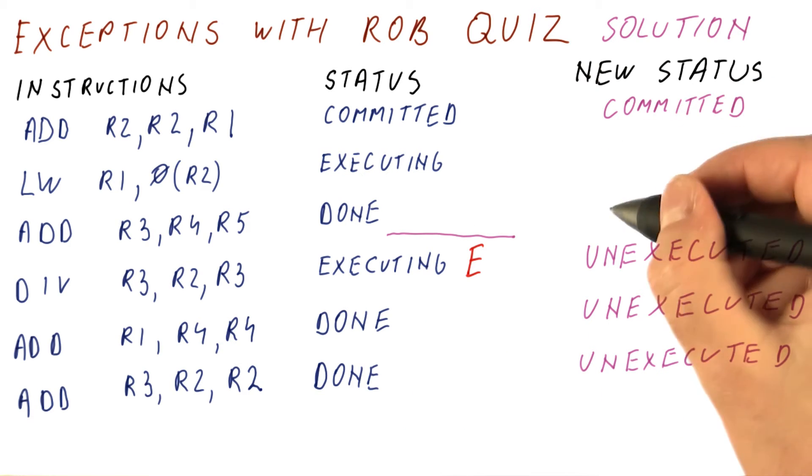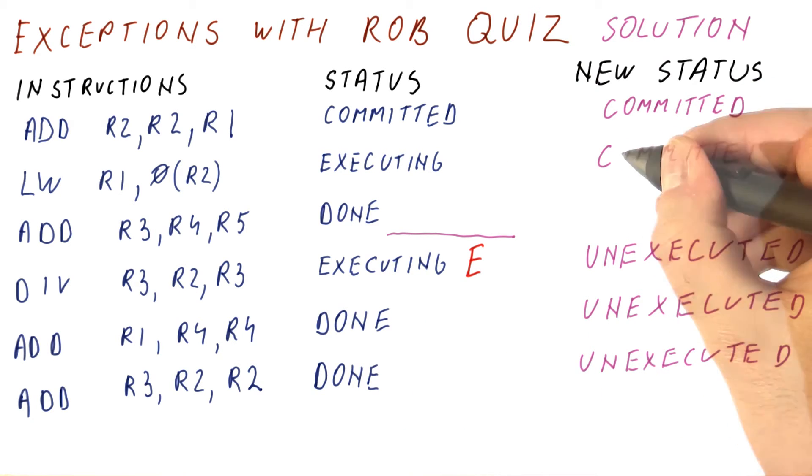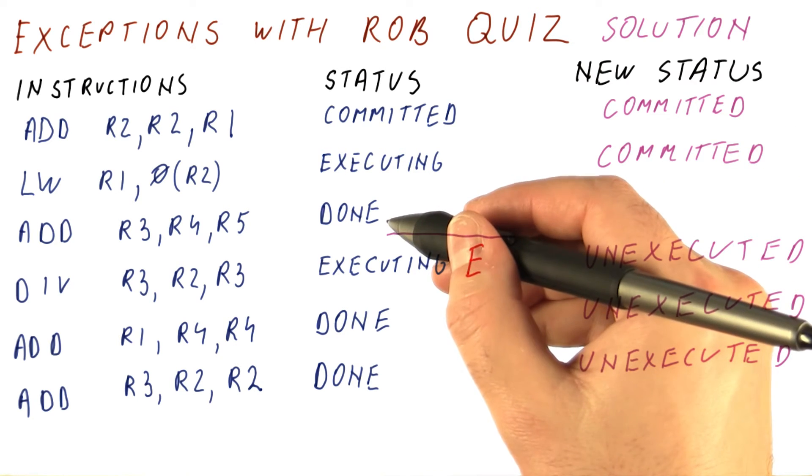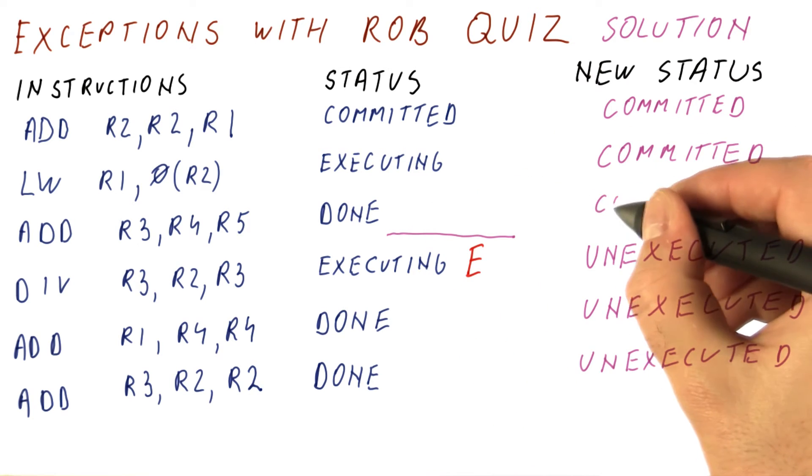What we do is we wait for them to commit. So what's going to happen is this instruction will eventually commit once it's done executing. And then this one was already done so it can very quickly commit afterwards.